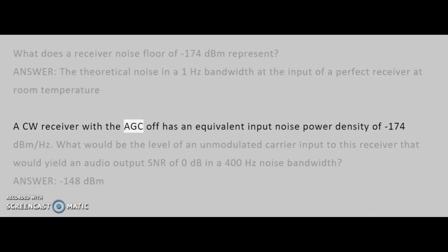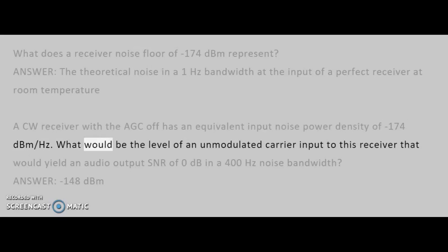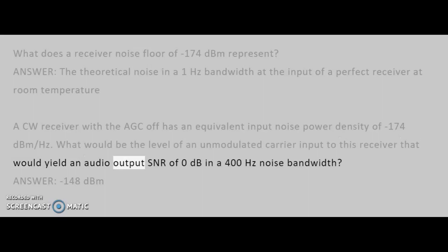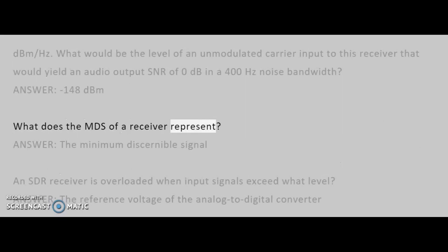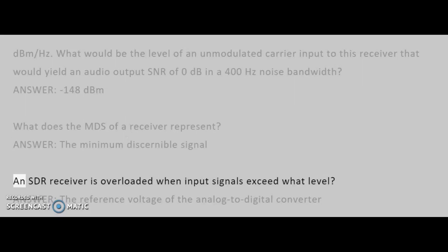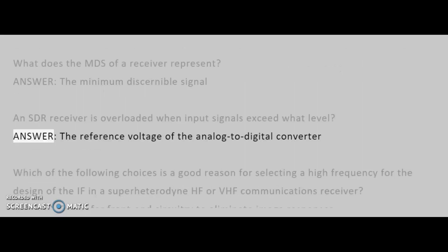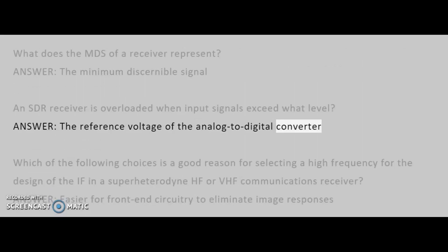A CW receiver with the AGC off has an equivalent input noise power density of minus 174 dBm per hertz. What would be the level of an unmodulated carrier input to this receiver that would yield an audio output SNR of 0 dB in a 400 Hz noise bandwidth? Answer: Minus 148 dBm. What does the MDS of a receiver represent? Answer: The minimum discernible signal. An SDR receiver is overloaded when input signals exceed what level? Answer: The reference voltage of the analog-to-digital converter.